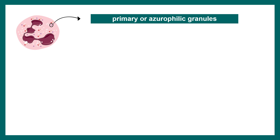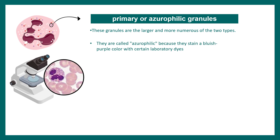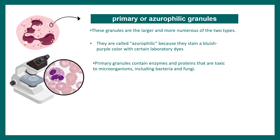Primary or azurophilic granules are the larger and most numerous type of granule among those present in neutrophils. They stain a bluish-purple color when stained with lab dyes, which is why they are known as azurophilic.